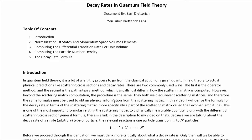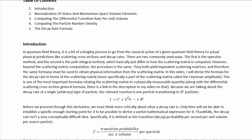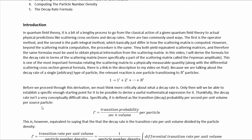In this video, I will derive the formula for the decay rate in terms of the scattering matrix, more specifically a part of the scattering matrix called the Feynman amplitude. This is one of the most important formulas relating the scattering matrix to physically measurable quantities, along with the differential scattering cross-section general formula. Because we are talking about the decay rate of a single, arbitrary type of particle, the relevant reaction is one particle transitioning to n prime particles.